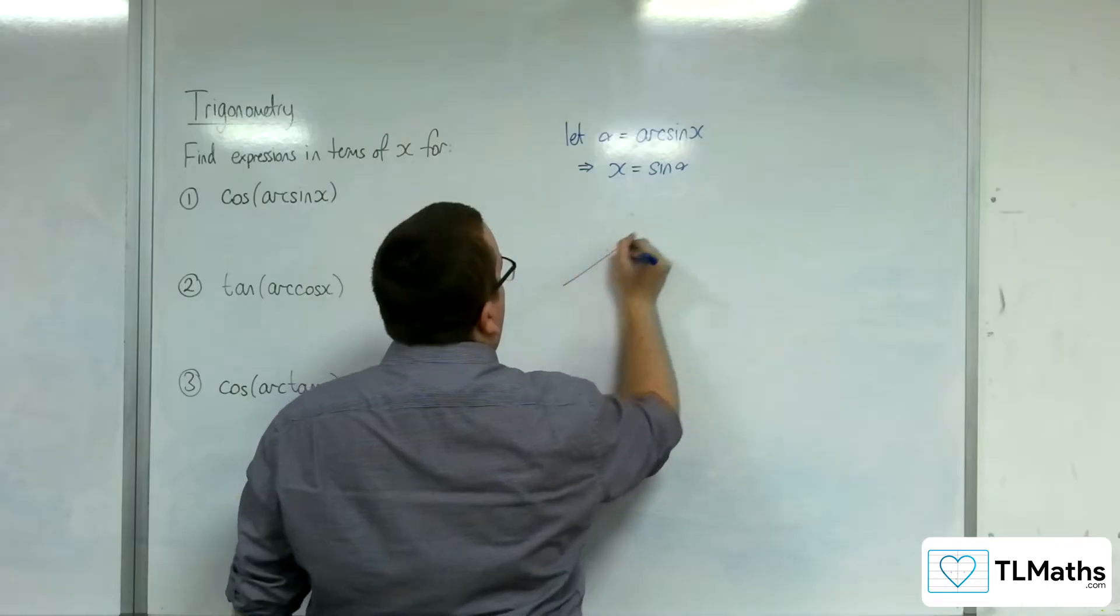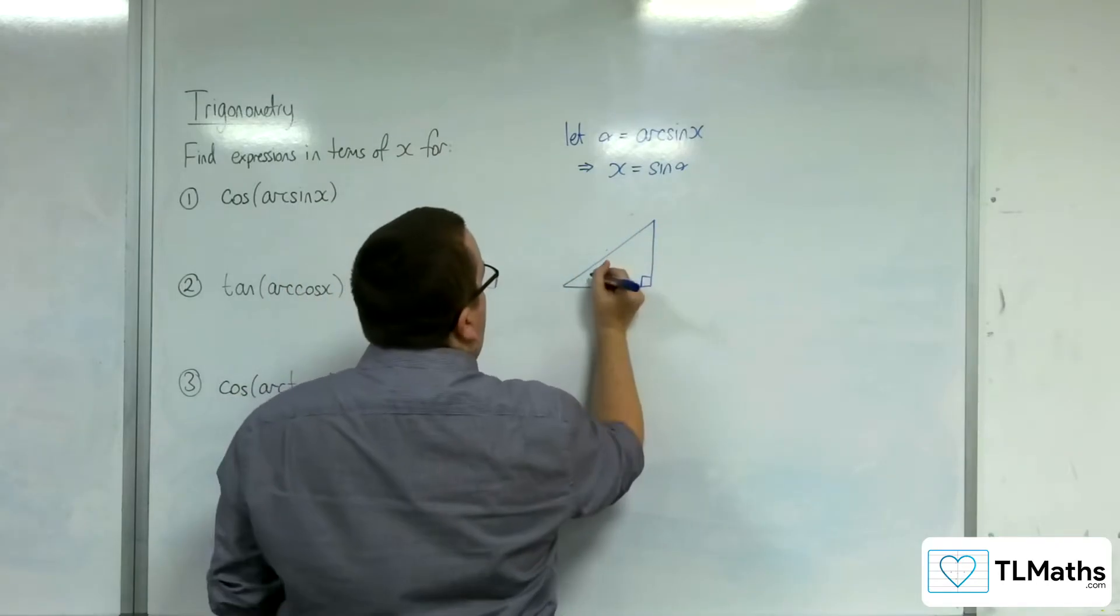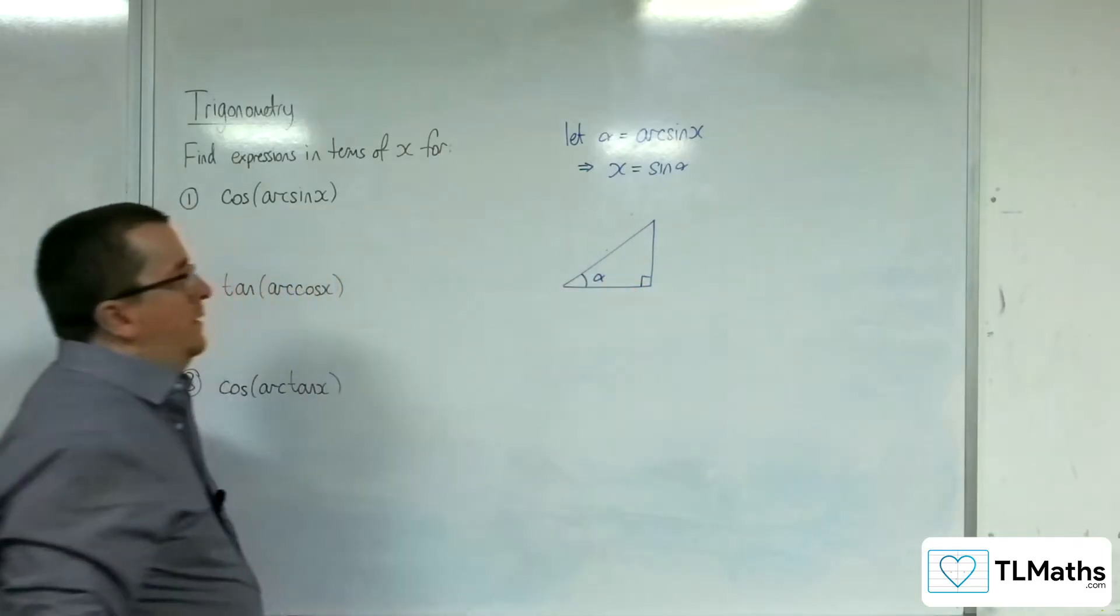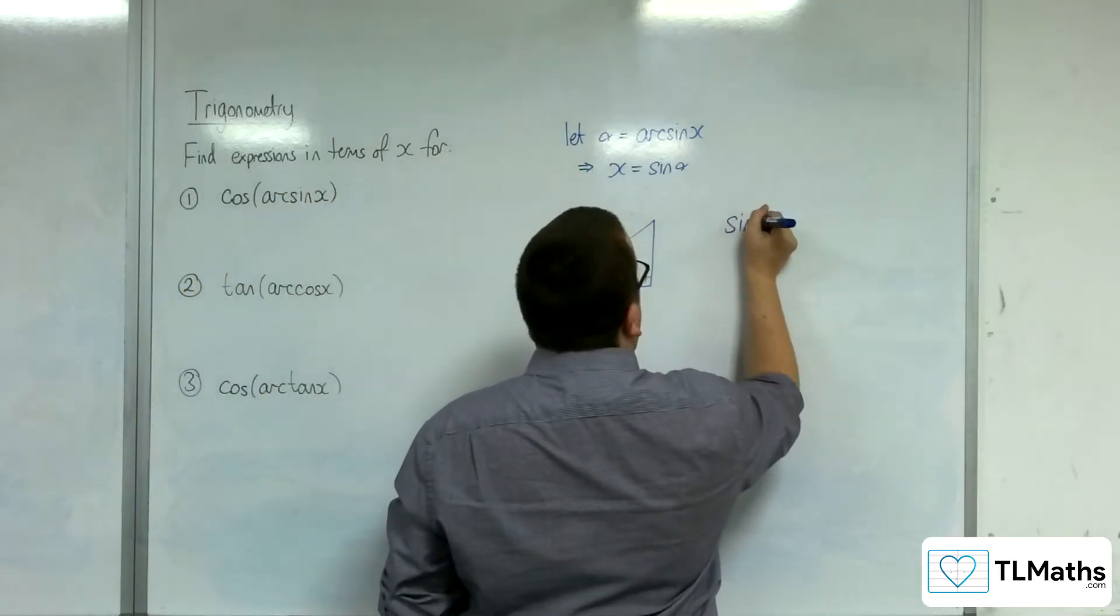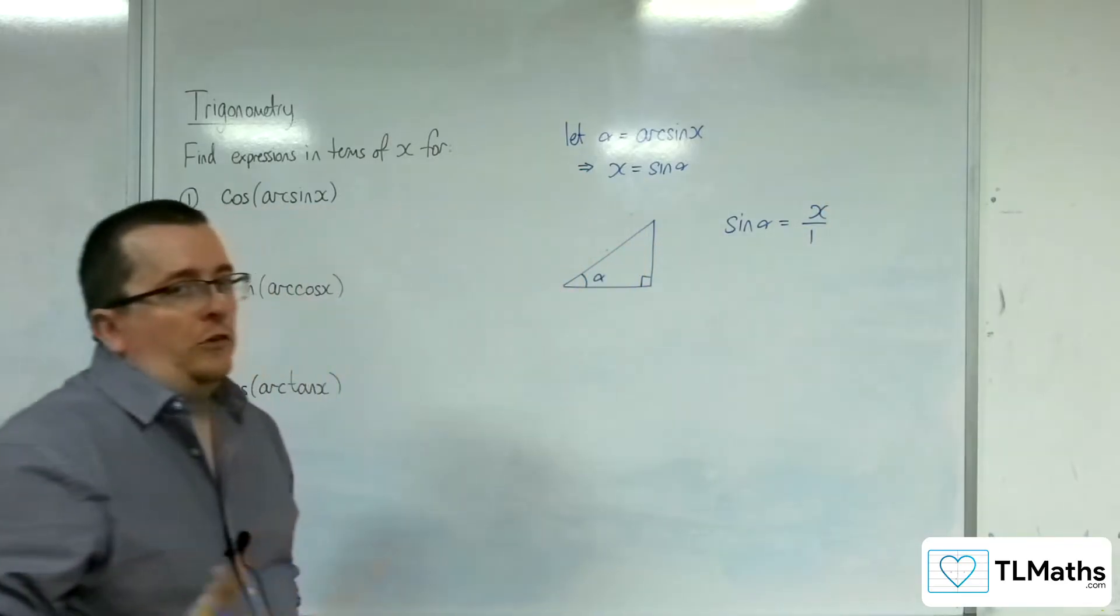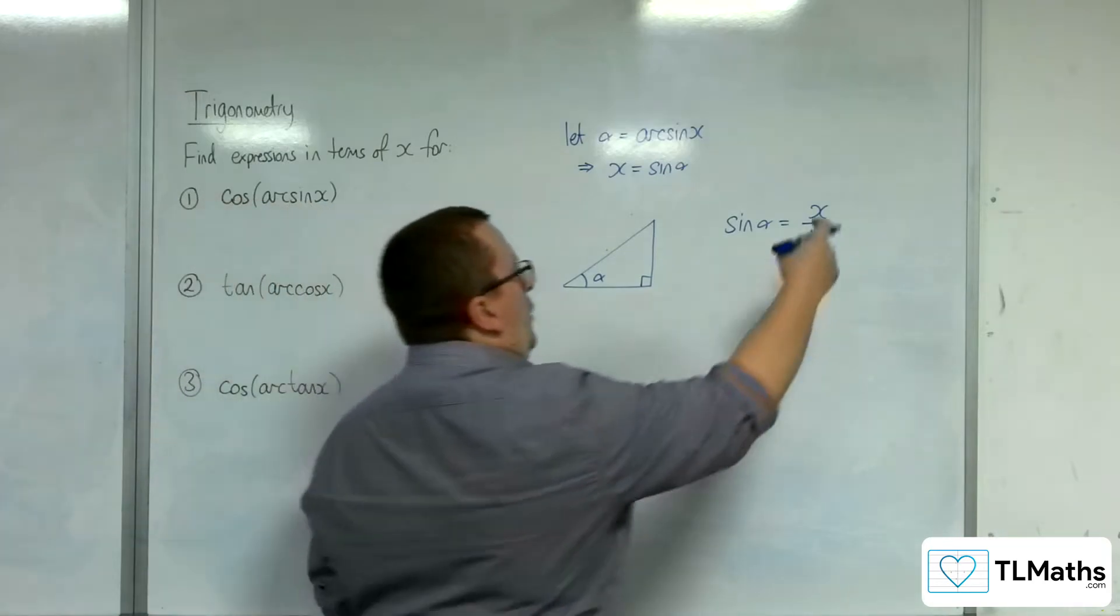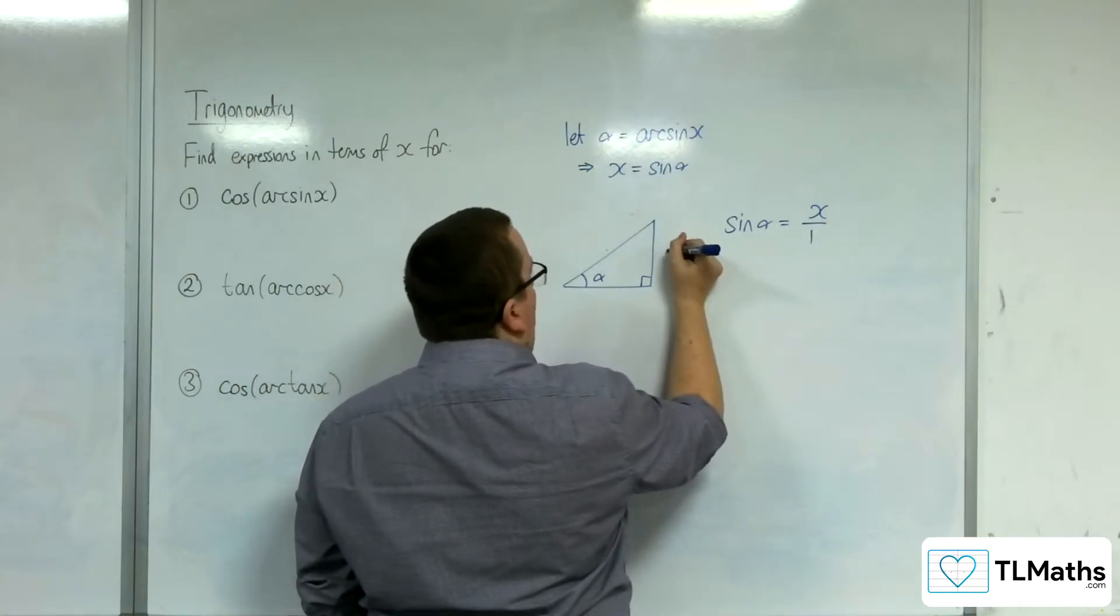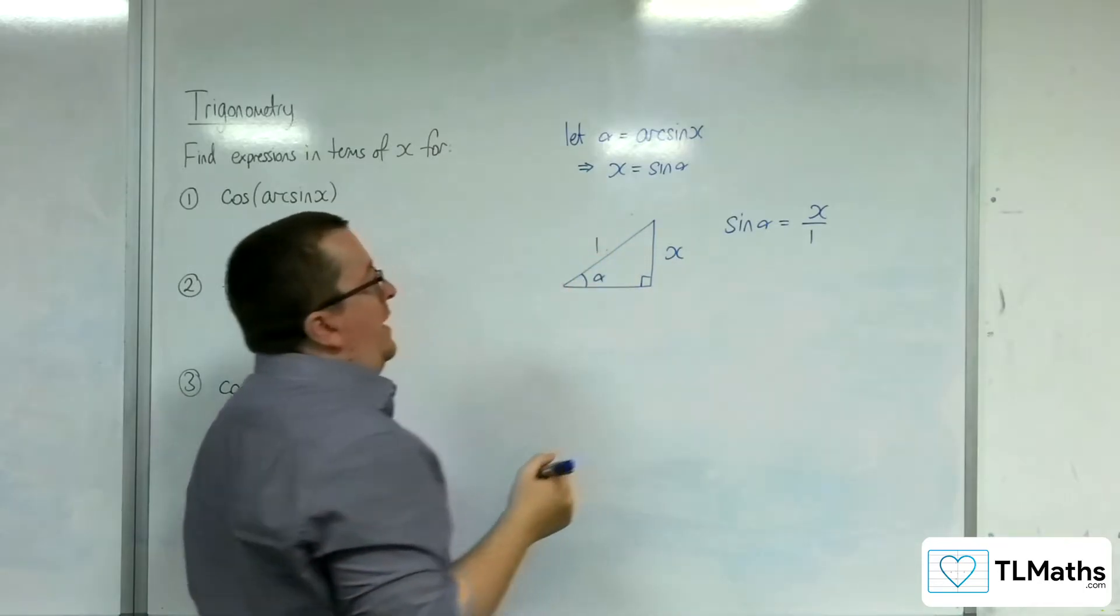Now if I draw a right angle triangle, here is my angle alpha. Now if I'm saying that sine of alpha is equal to x, I could also write the x as x over 1. Now with SOHCAHTOA, sine is opposite over hypotenuse. So that means if that's the opposite side, that is x, and the hypotenuse must therefore be 1.